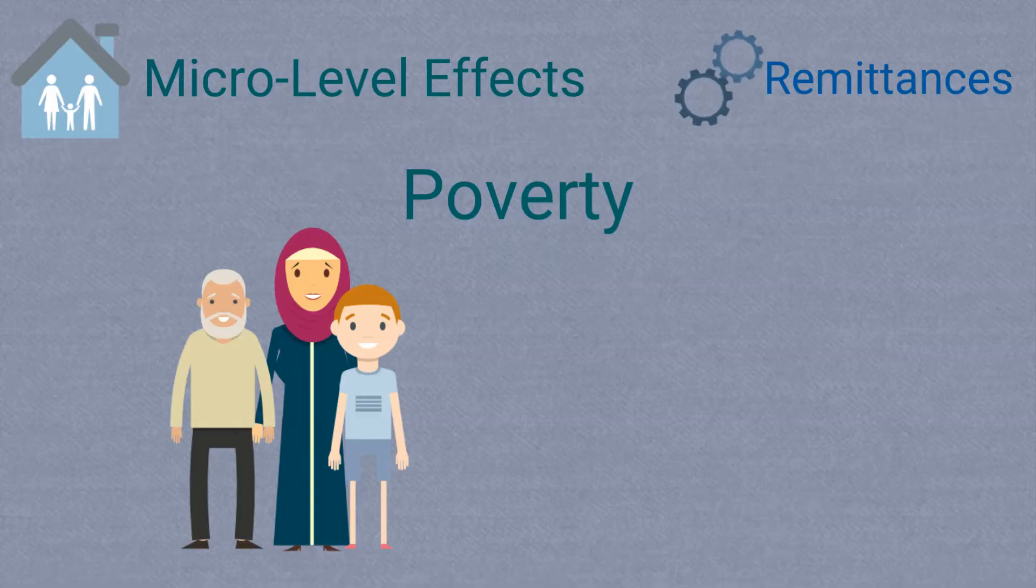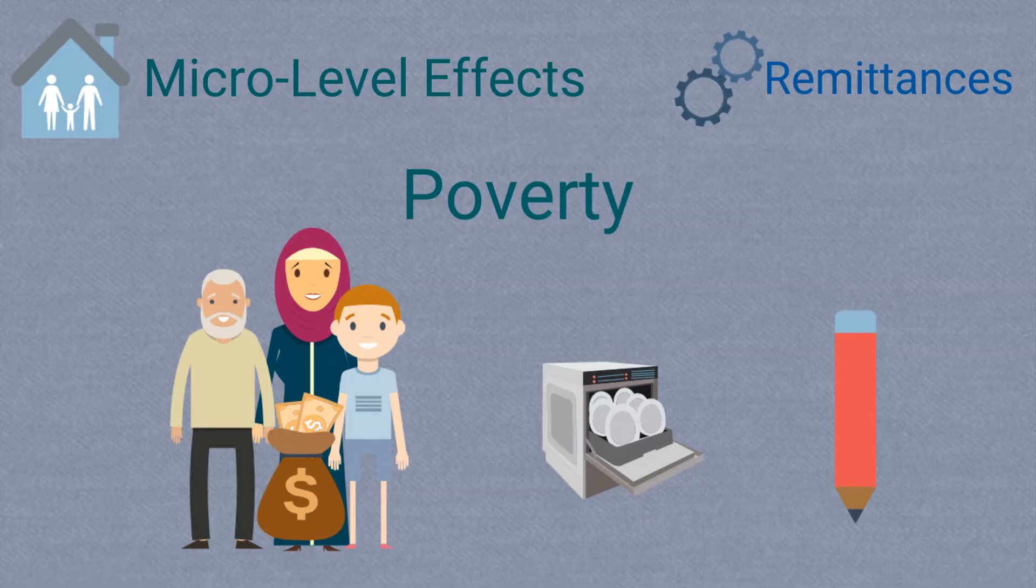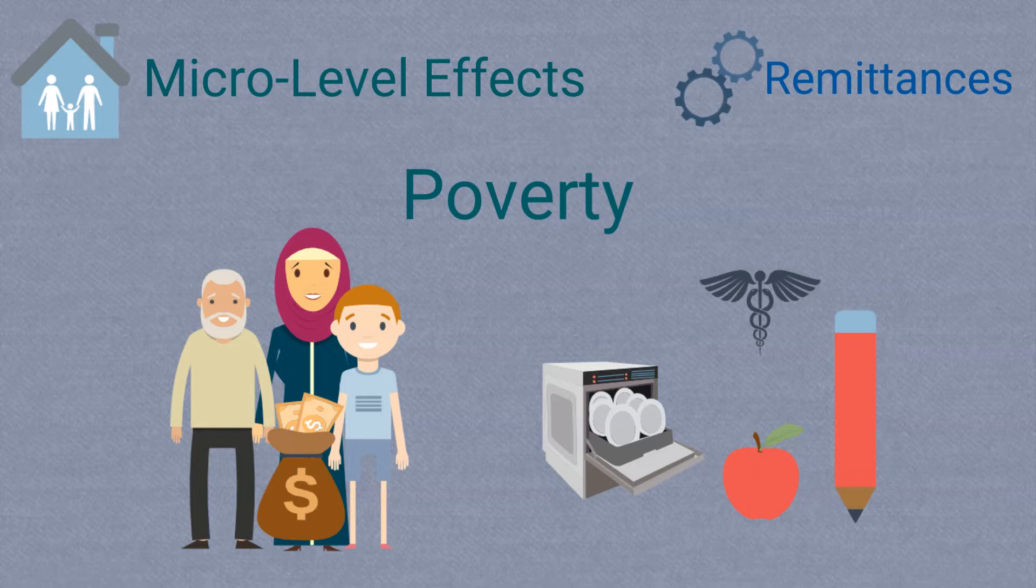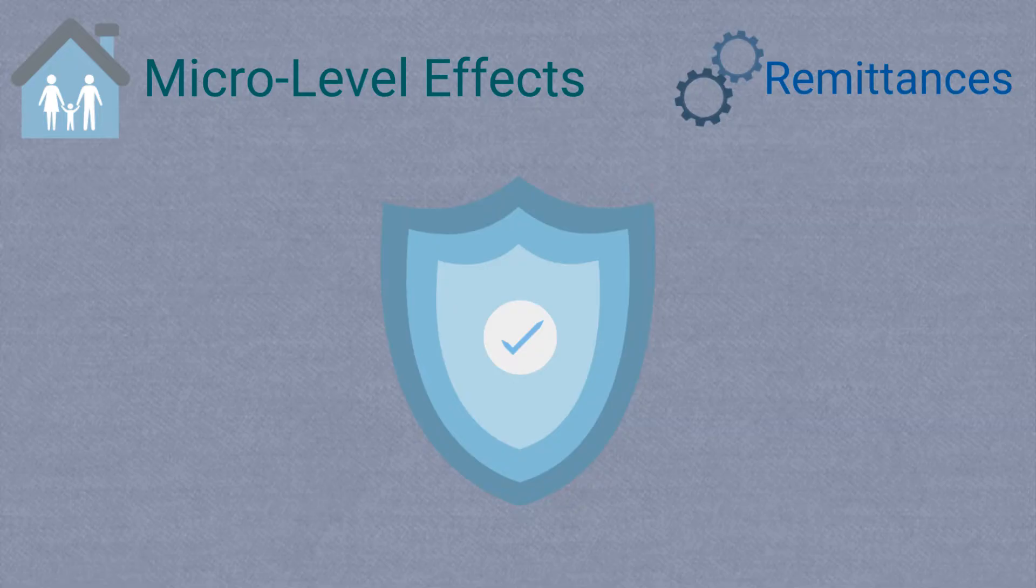Remittances sent to households can help to move these remittance-receiving families out of economic poverty, allowing them to have better living standards, send their children to school because they can pay the school fees or don't need the children to work, and can pay for medical care and buy better food resulting in better nutritional outcomes. The majority of research shows that migration has a positive effect in all of these areas, but that does not mean this is always the case.